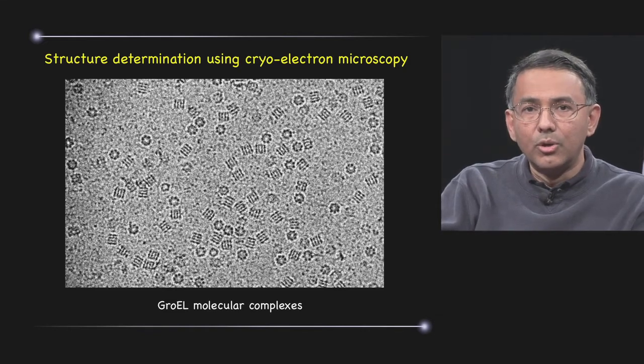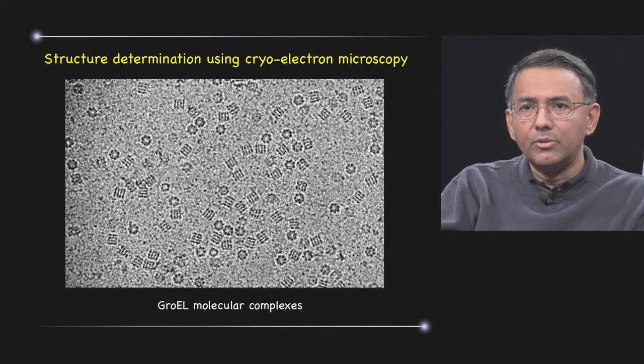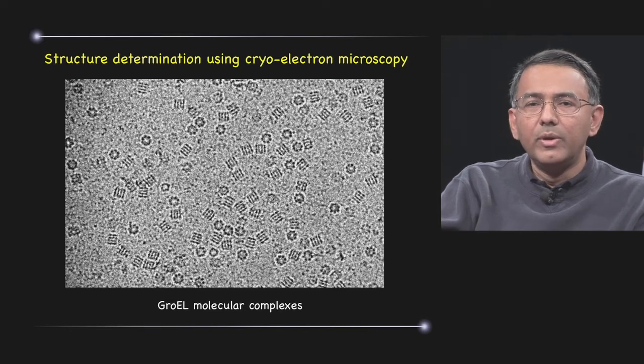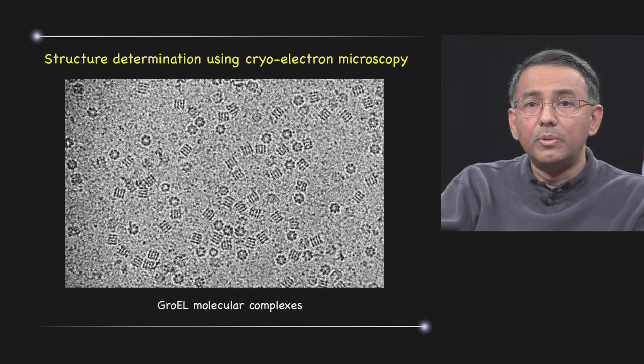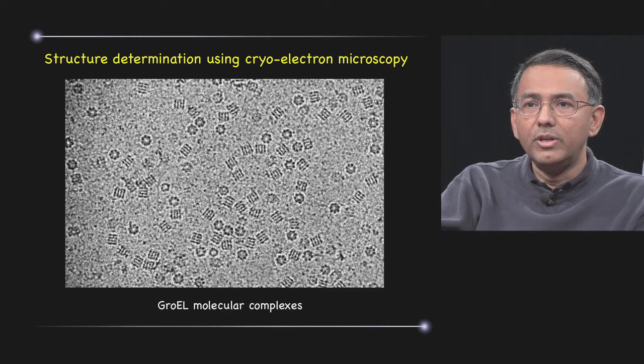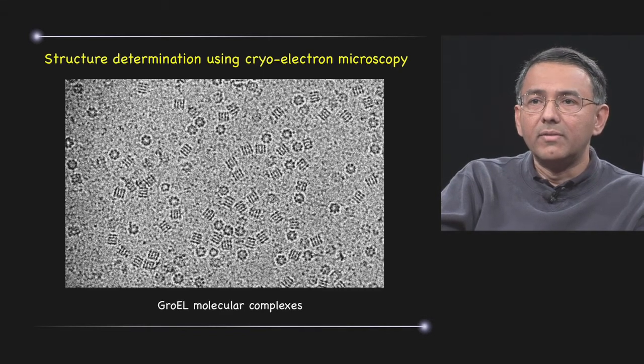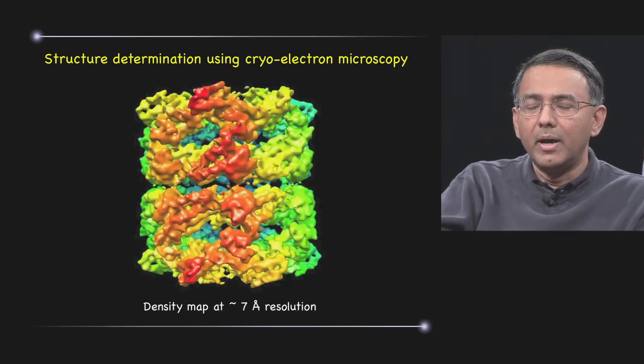Because these are recorded at low dose to minimize damage, they're very noisy, but by figuring out the relative orientations of each of these molecules with respect to the others, we can average the information in tens of thousands of these molecules to obtain a density map in this instance of GroEL, which can be at relatively high resolution.